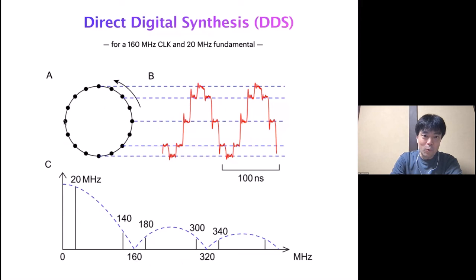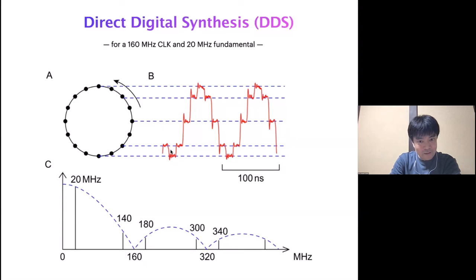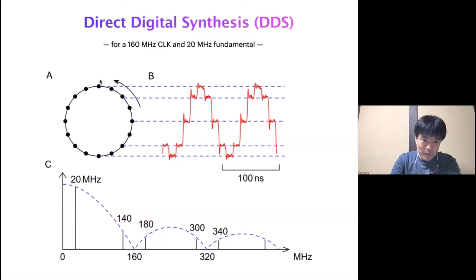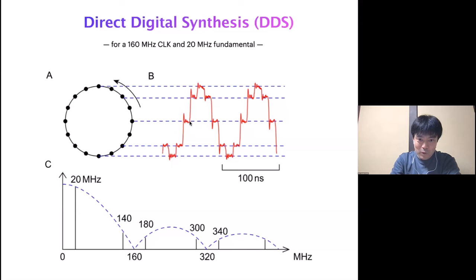We can mentally imagine a wheel. Imagine that we are moving on the circumference of this wheel at a constant rate. If we take the vertical coordinate as a function of time, it automatically gives a sinusoidal wave. In this example we are doing it in discrete steps, driving this wheel at a rate of 160 MHz, 45 degrees on each step. So eight steps correspond to one whole rotation, generating a 20 MHz fundamental signal. In addition, we have some harmonics.